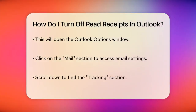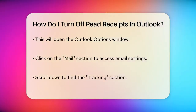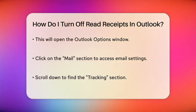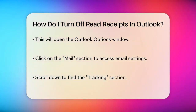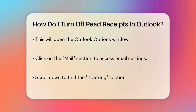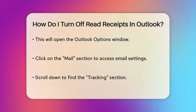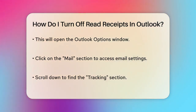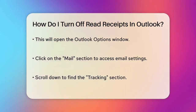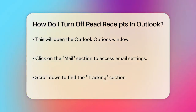In the Outlook Options window, click on Mail. This is where you can adjust various email settings. Now scroll down until you reach the Tracking section. This is where you can manage read and delivery receipts. Within the Tracking section, you'll see options related to read receipts.